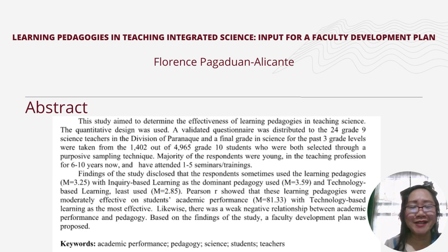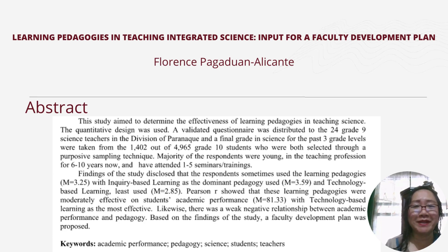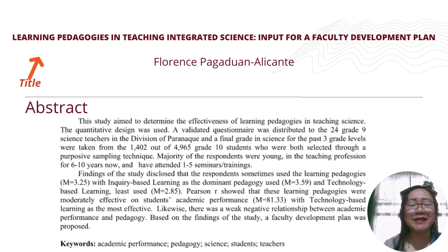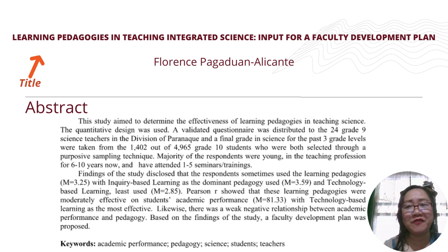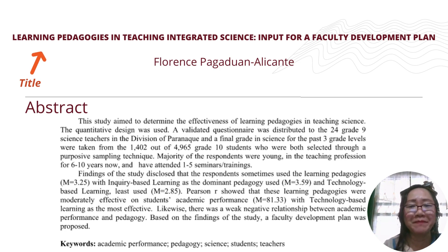Let us study the different parts of the research paper with an example. On the screen is an example of a research paper. The first part is the title or the research title. In our example, the title is 'Learning Pedagogies in Teaching Integrated Science: Input for a Faculty Development Plan.' The title is written on top of the research paper.